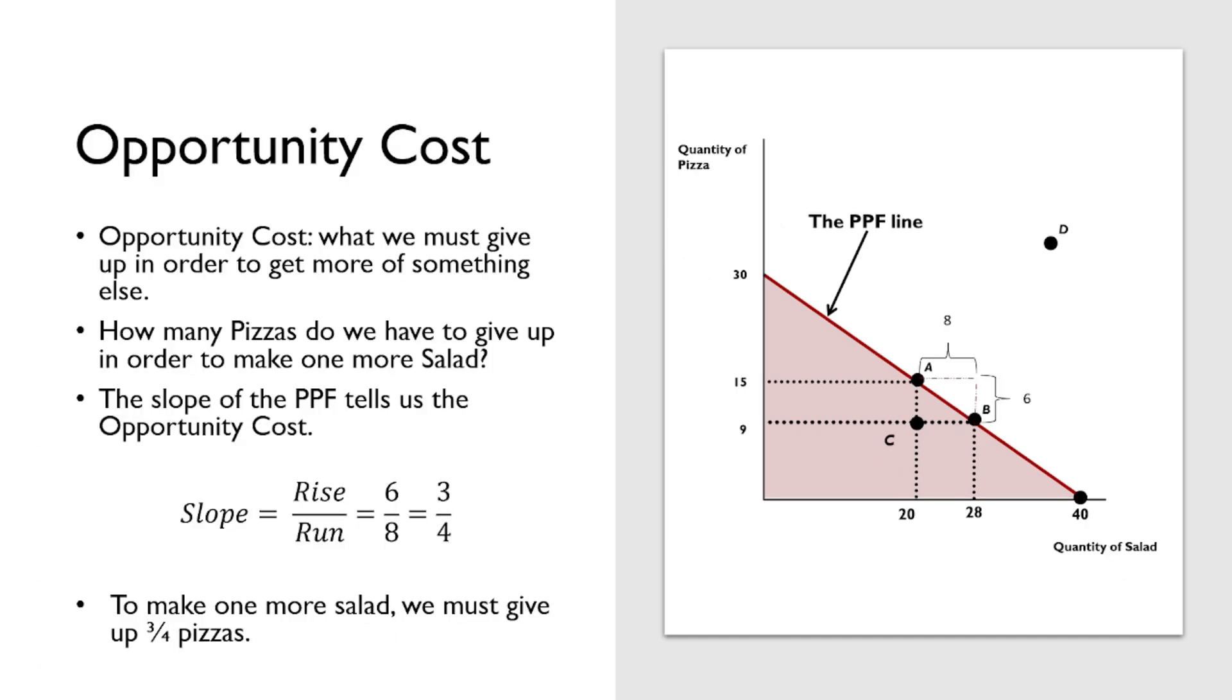This trade-off can be seen in the slope of the production possibility line. This is the opportunity cost. If we're at point B, making 9 pizzas and 28 salads, the only way to make more pizza is if we devote less of our cooks in the salad production, take them away from that, and put them towards pizza production. How many pizzas do we have to give up in order to make one more salad? The slope is equal to rise over run. In this case, it's 6 over 8. We could reduce that down to 3 fourths. To make one more salad, we must give up three fourths of a pizza.